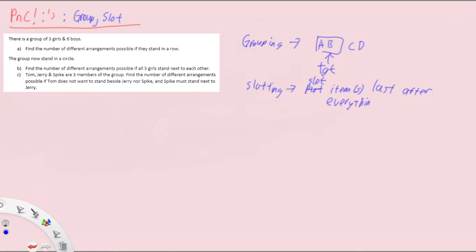We'll see these ideas in action in this example: a group of three girls and six boys, so a total of nine people. Find the number of different arrangements if they stand in a row — quite simple, right? Nine factorial.